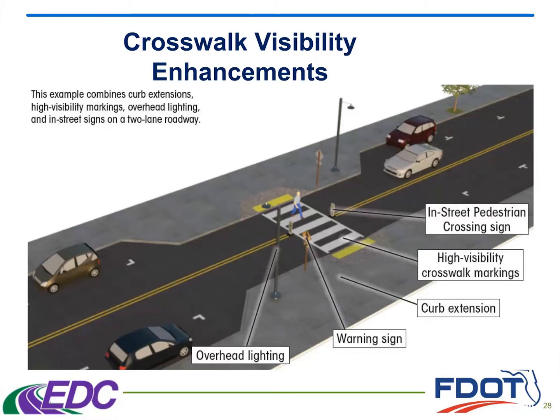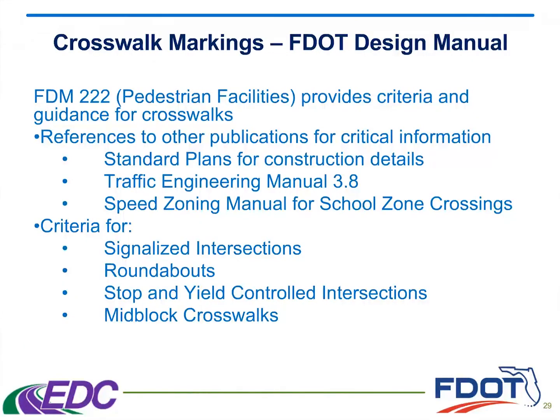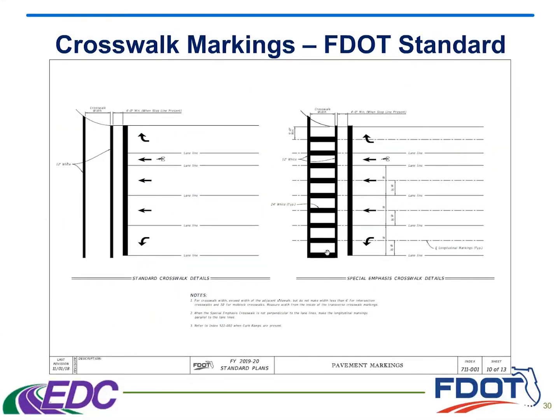The FDOT Design Manual, otherwise known as the FDM, Chapter 222 is entitled Pedestrian Facilities. In this chapter, we also reference other publications that are critical to the design. The standard plans show construction details, the traffic engineering manual has additional design criteria, and the speed zoning manual has criteria for school zone crossings. The criteria contained in the FDM covers signalized intersections, roundabouts, stop and yield controlled intersections, and mid-block crosswalks.